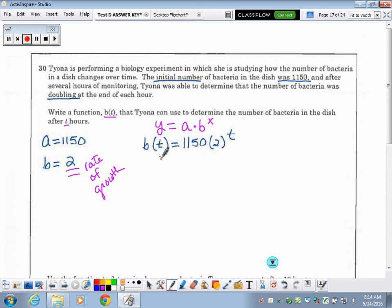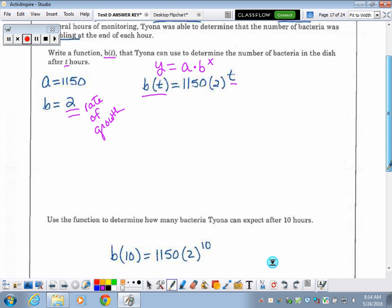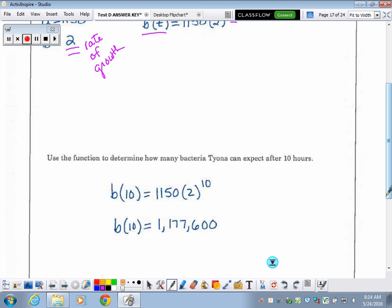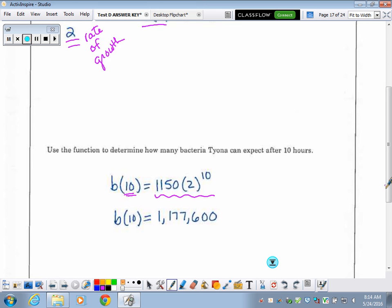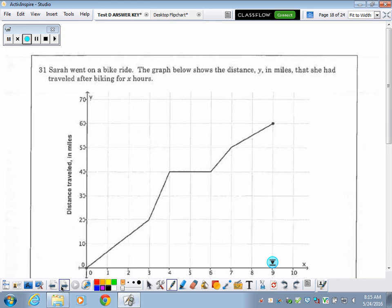So just subbing those values into here, this is what we end up with. They only want the function rule that can be used to determine this. Now notice they're using b of t and t. So notice that's what I used when I subbed in. You want to make sure, remember, the details are really important. You want to be looking for those things. You really have to scrutinize every problem. And then they want you to use that function rule to see how many bacteria she can expect after 10 hours. So now I'm finding b of 10. I'm substituting in 10 in place of t. You put this into your calculator exactly how it is, and there you go. You get your final answer.